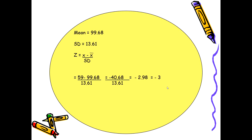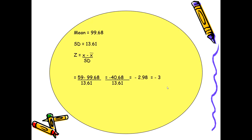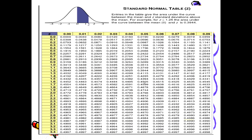Both procedures — calculating confidence intervals and computing Z-score — can be adopted. Moving forward, how do we interpret the Z-score? Looking at the Z-table, the exact value of Z-score is minus 2.98.